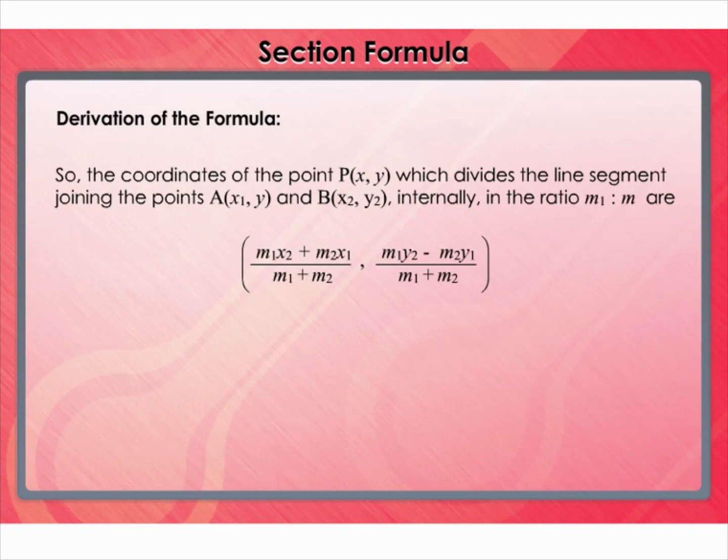So, the coordinates of the point P(x, y) which divides the line segment joining the points A(x₁, y₁) and B(x₂, y₂)